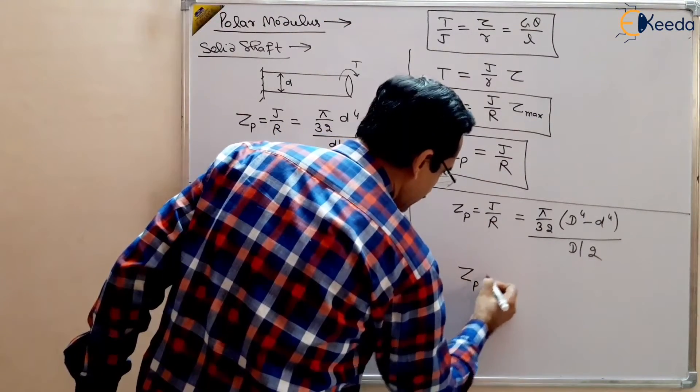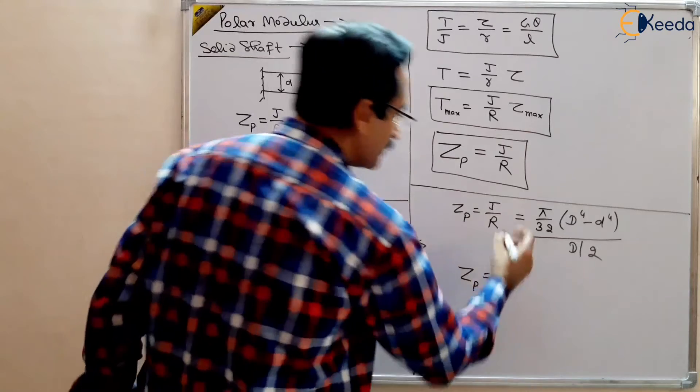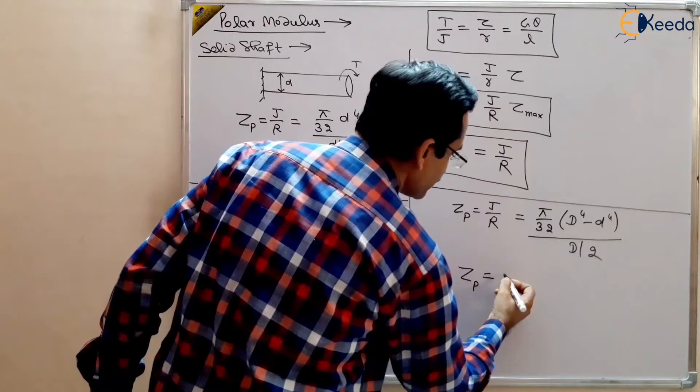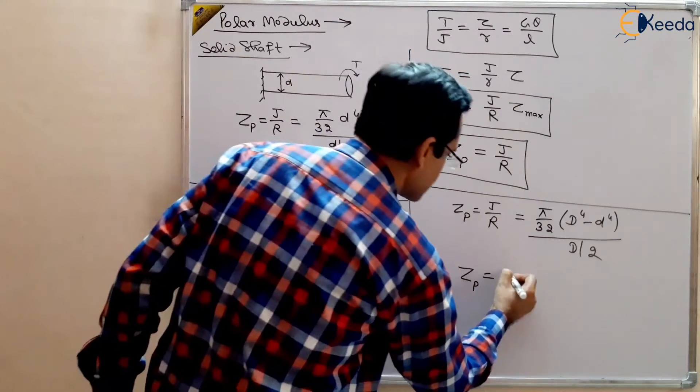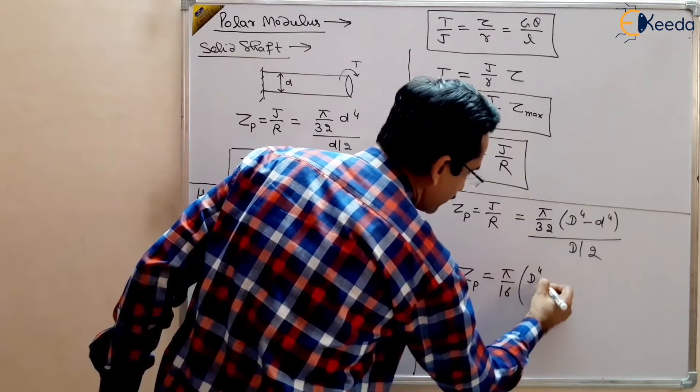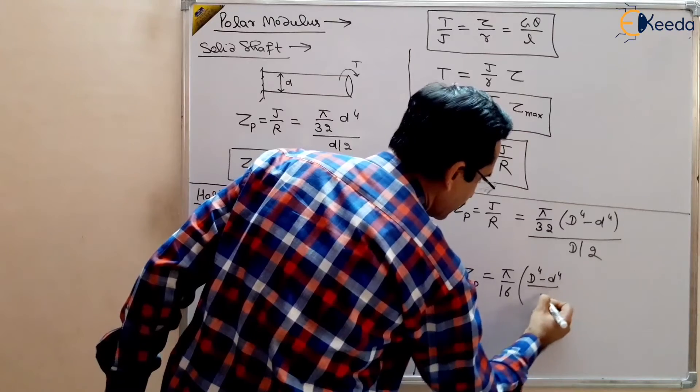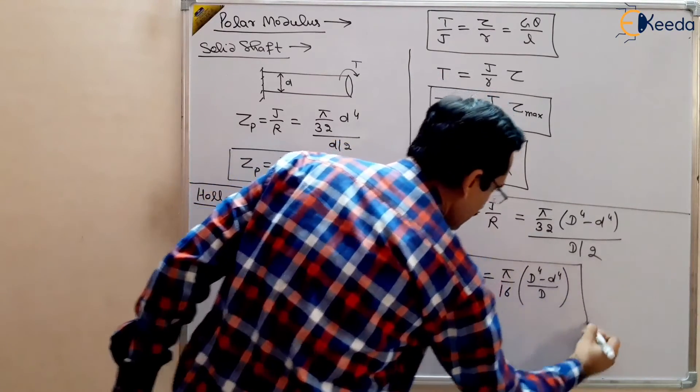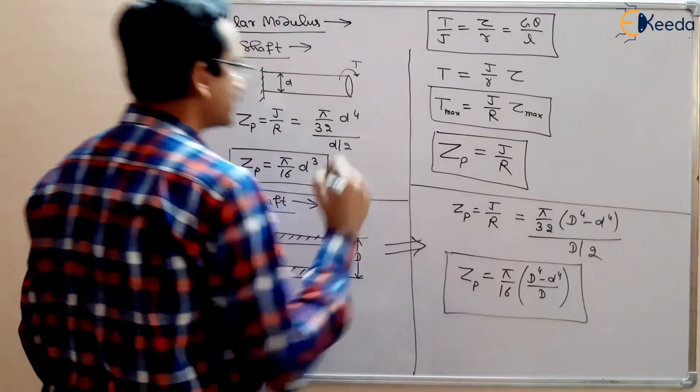So ZP will be equal to for hollow shaft that will be equal to pi by 16 d to the power 4 minus d to the power 4 divided by capital D. So this is the Polar Modulus for hollow shaft.